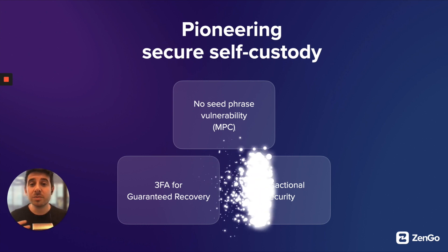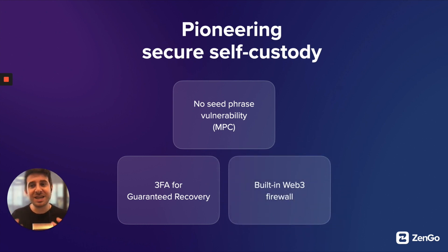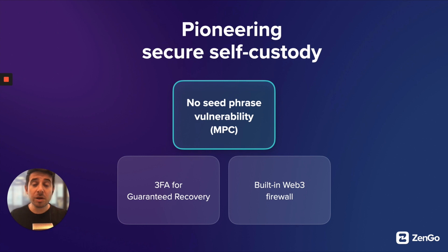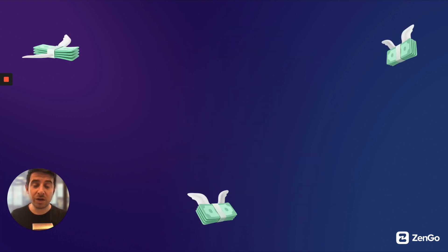In terms of transactional security, Zengo has a built-in Web3 firewall that automatically reviews every transaction before you approve it, to ensure that what you're actually approving is what you mean to approve. Let's jump in by focusing first on what MPC is, how it works, and why it's so much more secure than a traditional crypto wallet — even a hardware wallet.